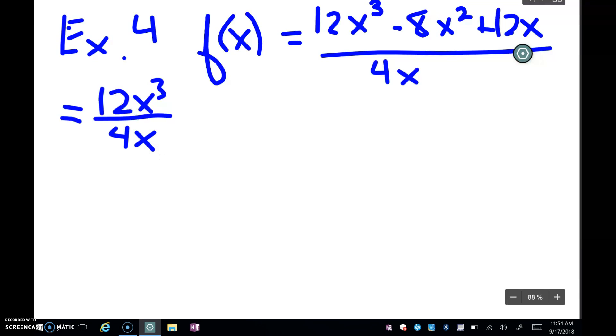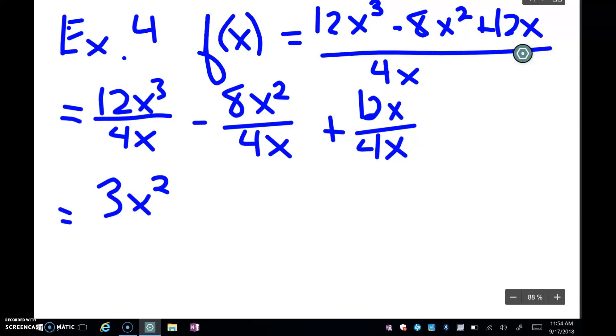So I have 12x^3 over 4x minus, and then my 8x^2 over 4x, and then plus 12x over 4x. Then I simplify that. So that simplifies to 3x^2 - 2x + 3.